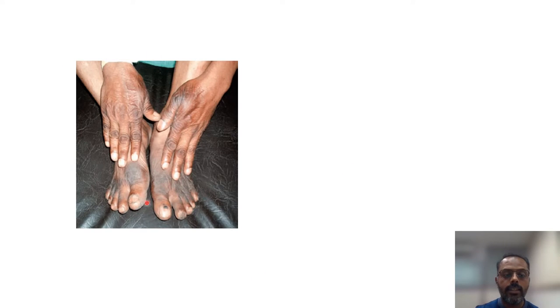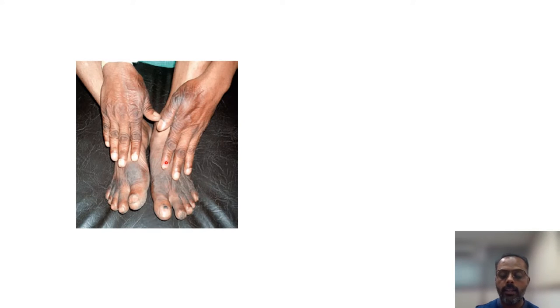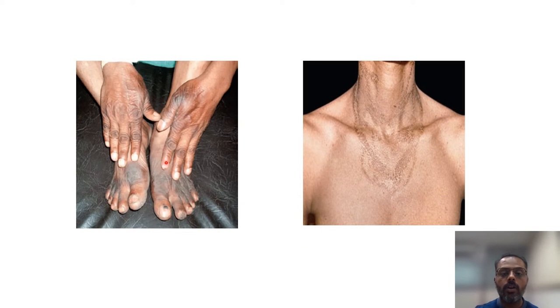Along with the description, some images are given for the case. In the case, you can see there is a presence of dry itchy scaly lesions on the dorsum of the hand. There is also presence of hyperpigmentation around the neck area. Now let's see the questions of this case study.